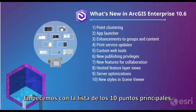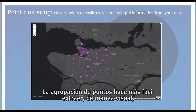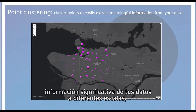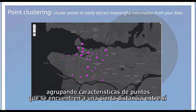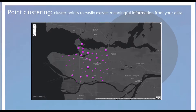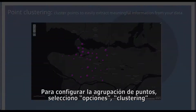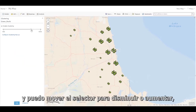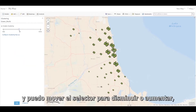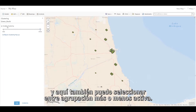Let's get started with the list of 10. Clustering makes it easier to visually extract meaningful information from your data at different scales by grouping point features that are within a certain distance of one another into one symbol. Let's take a look at an example with a point layer of green roofs. To configure clustering, I select Options and Clustering, and I can toggle between less and more, and also toggle clustering on and off.